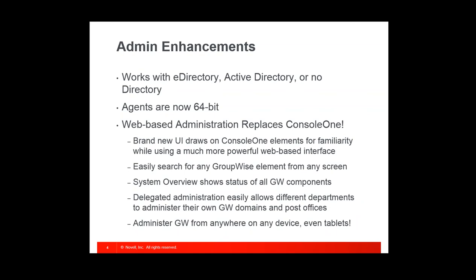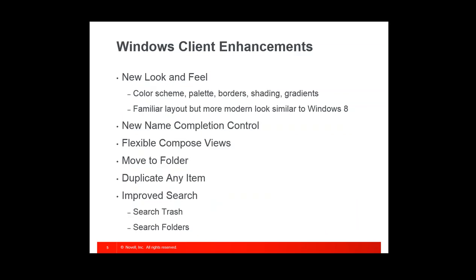In today's demo we're not going to be showing the admin console — if you want to see that, feel free to contact me and we'll schedule a one-on-one demo. Today we're just showing client and web access end-user-related stuff. From the admin perspective, those are the two biggest things. Additionally, the agents are now 64-bit, so if you're running a 32-bit OS for your GroupWise environment today, you need to migrate to a 64-bit OS to run the agents. That's strictly the back-end side; the client is still 32-bit.